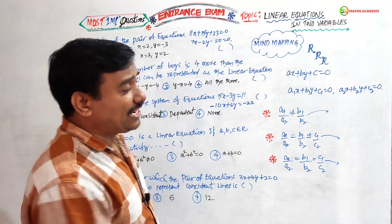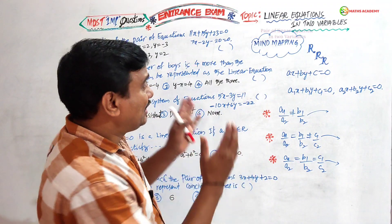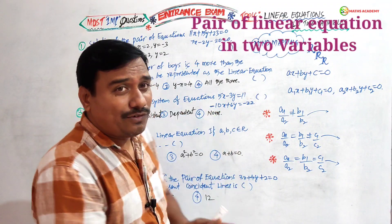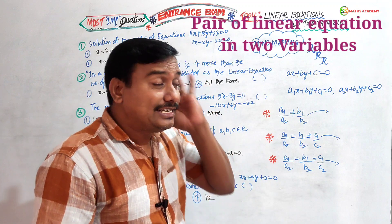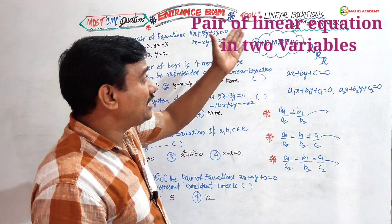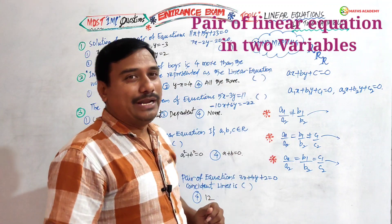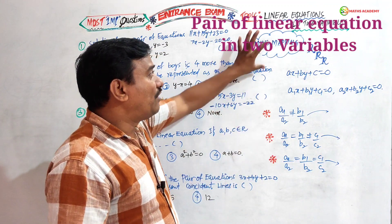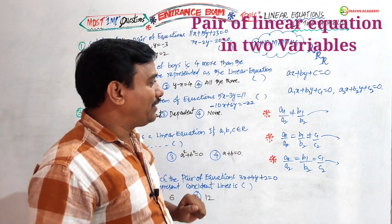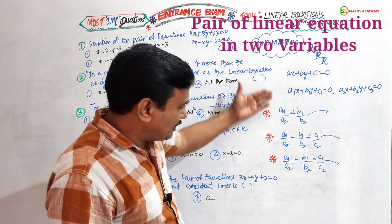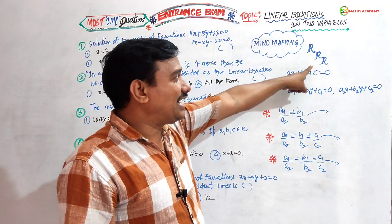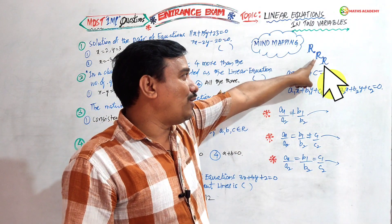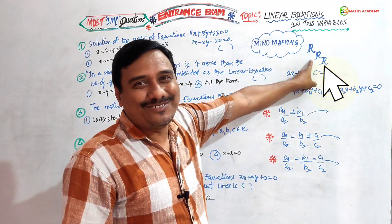Now friends, see the board. What a beautiful topic today — we are going to discuss linear equations in two variables. What is the mind mapping here? I have written one word: R R R.